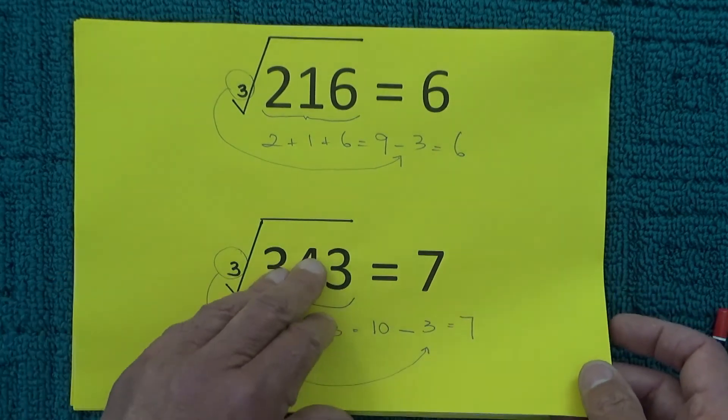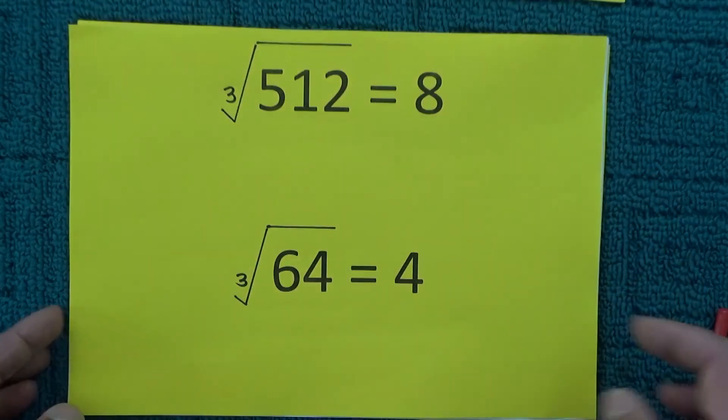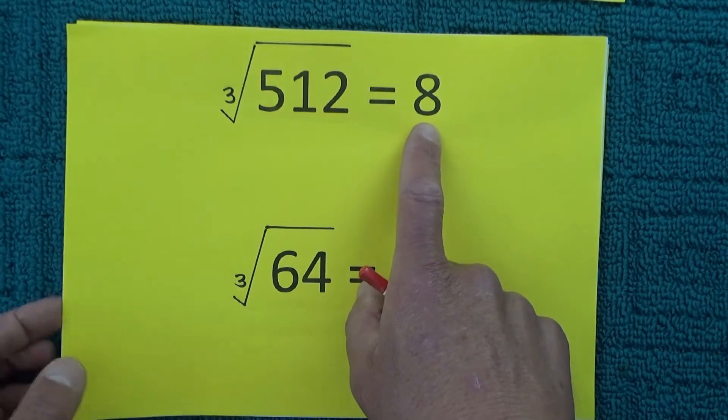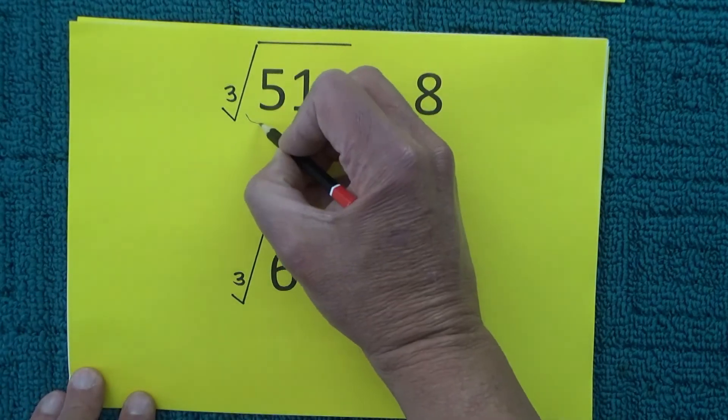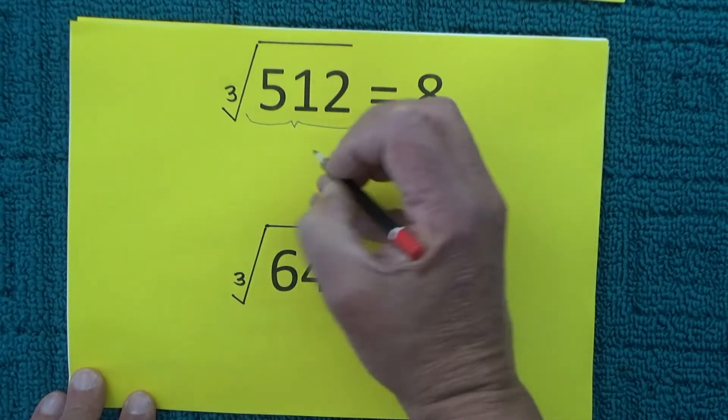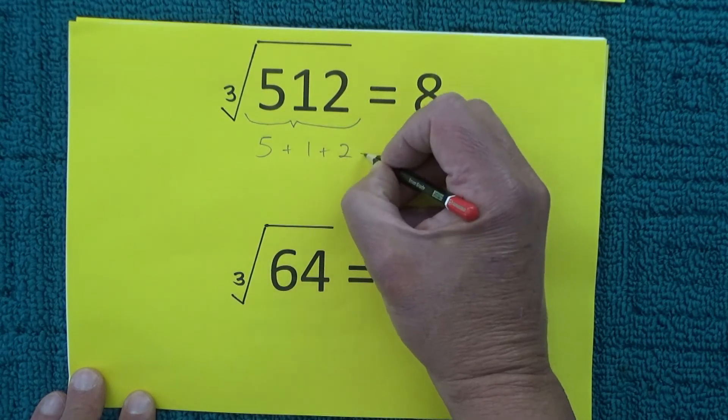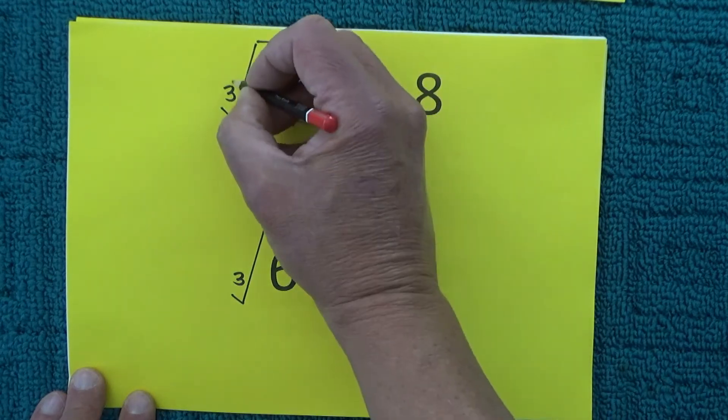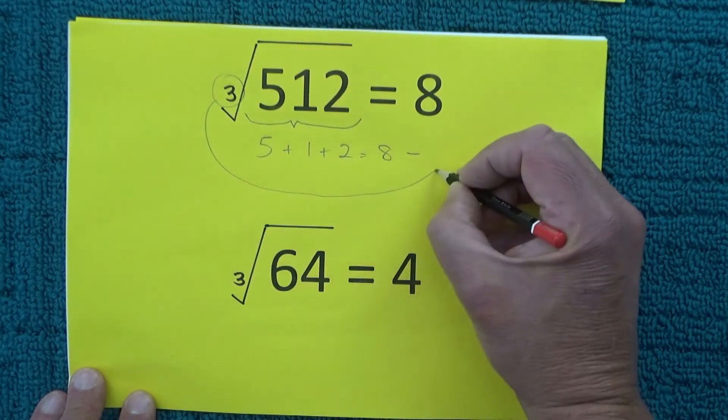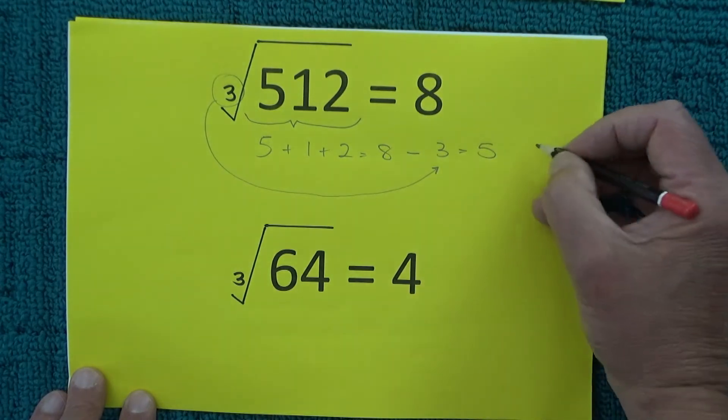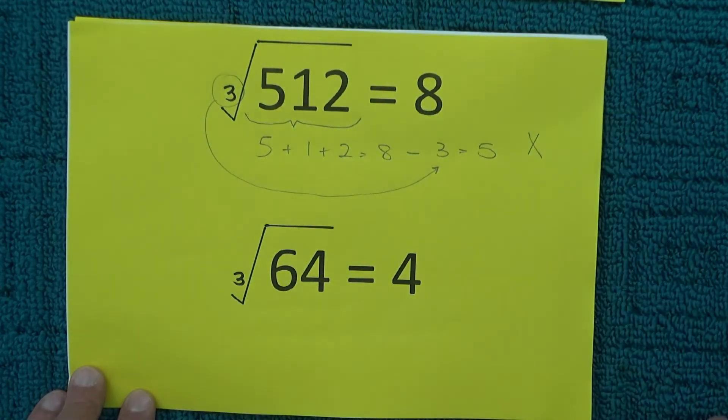That's interesting but when I tried the cubed root of 512 which is equal to 8, then this is where this shortcut method fell apart because 5 plus 1 plus 2 equals 8. Once again deduct the 3 and that equals 5, so that's a big cross on that one.